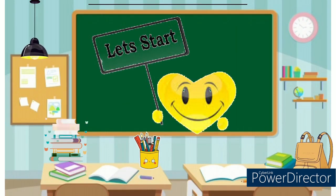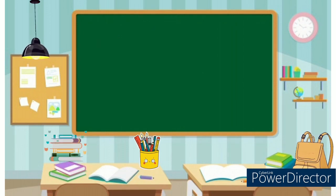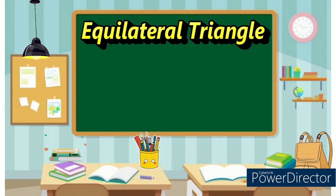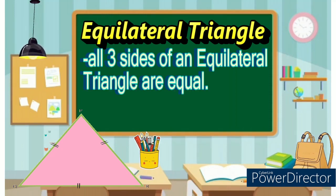Let us start classifying triangles based on sides. Equilateral triangle: all three sides of an equilateral triangle are equal.